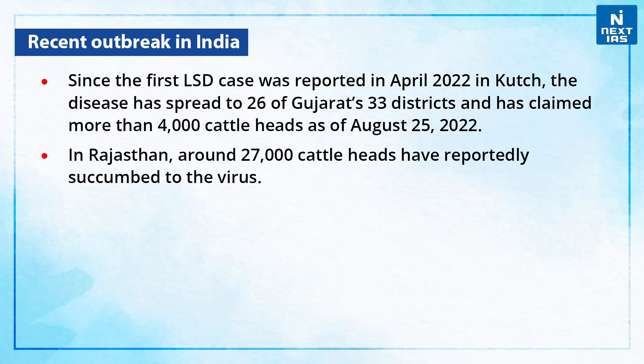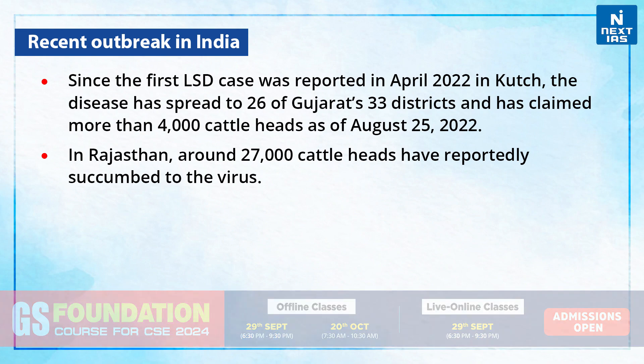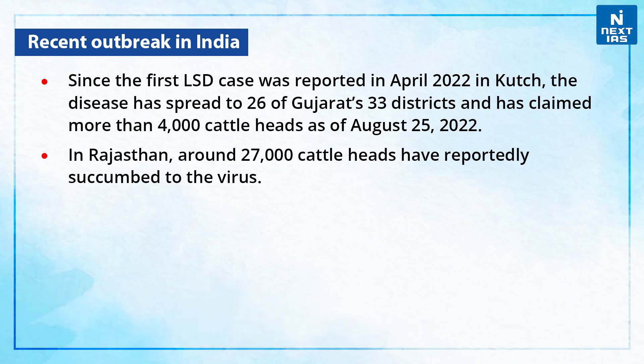Regarding the recent outbreak in India, since the first LSD case was reported in April 2022 in Kutch, Gujarat, the disease has spread to 26 of Gujarat's 33 districts and has claimed more than 4,000 cattle heads as of August 25, 2022. In Rajasthan, around 27,000 cattle heads have reportedly succumbed to the LSD virus.